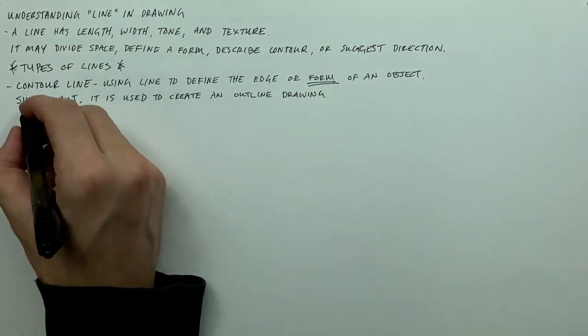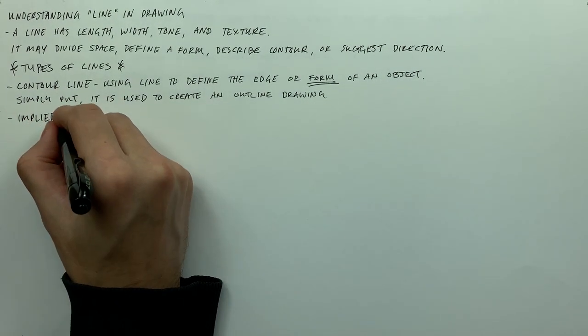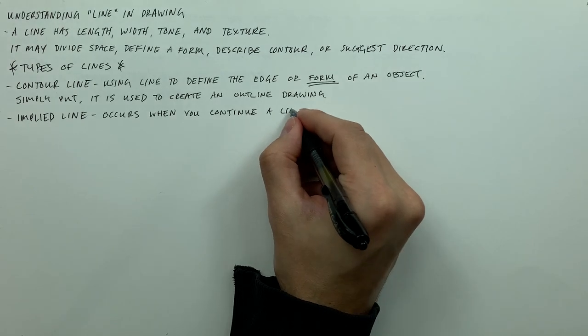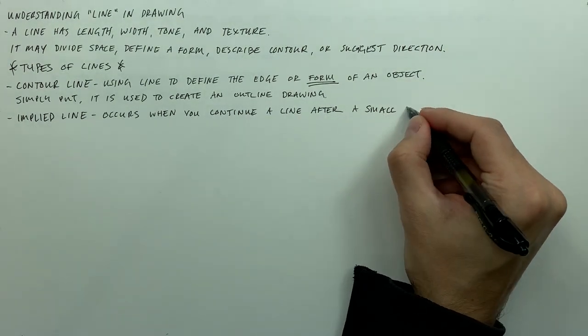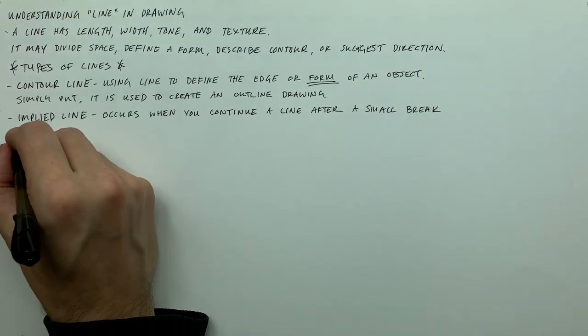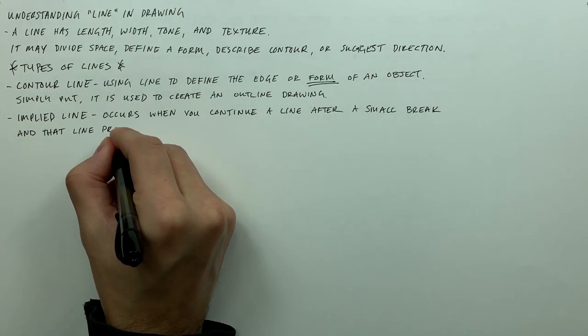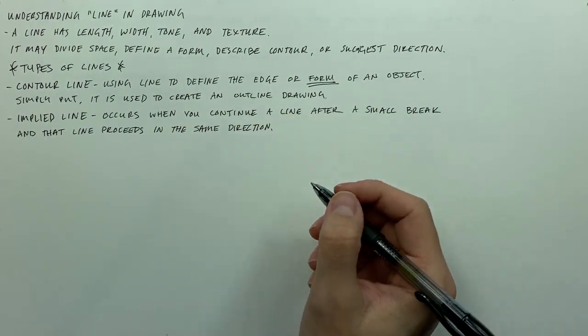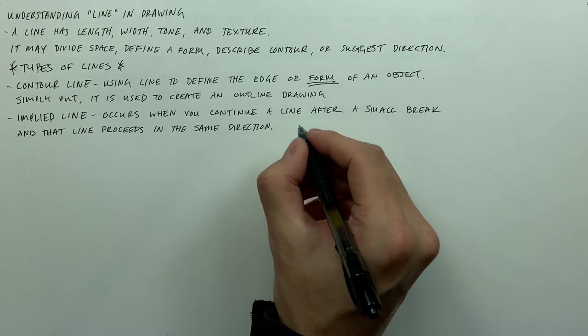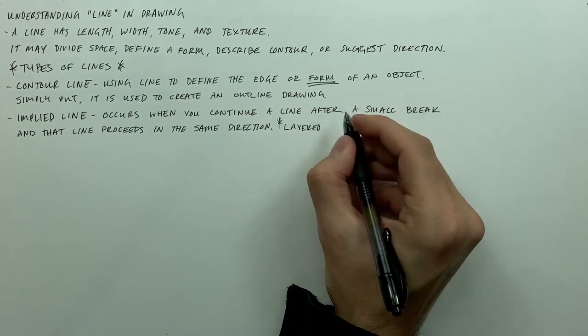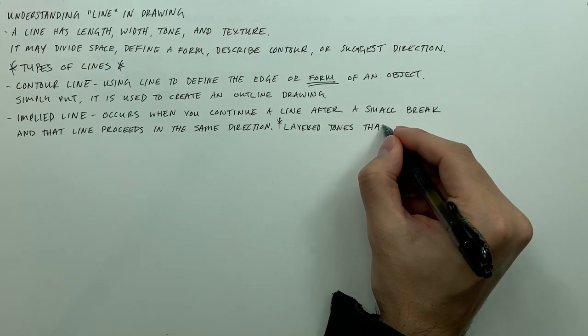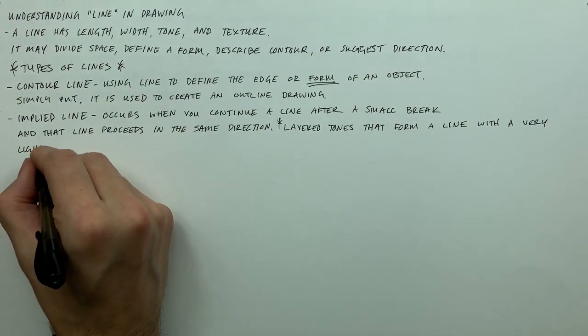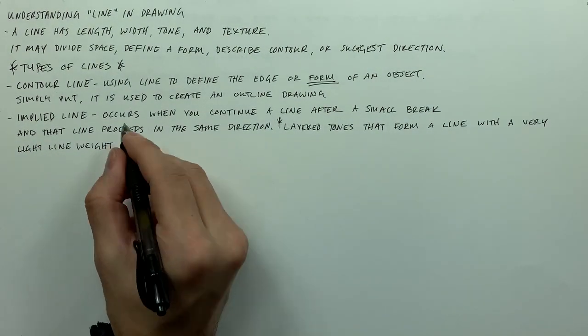Next up is the implied line. Now in normal drawings such as graphite, this occurs when you continue a line after a small break and that line proceeds in the same direction. With the three-layered method charcoal approach that I'm teaching you, it's important to note that your layered tones that form a line - lighter tone and then a darker tone on top of that - will create a very light line weight, and that also is an implied line.